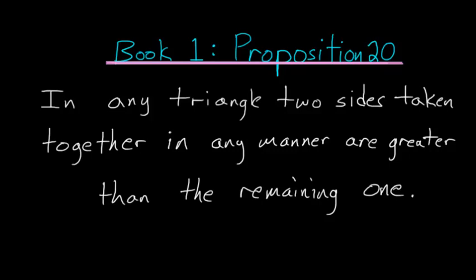For book one proposition number 20 of Euclid's Elements, in any triangle two sides taken together in any manner are greater than the remaining one.